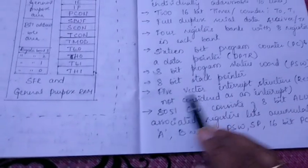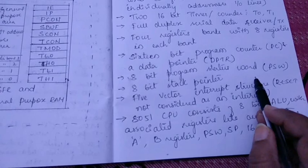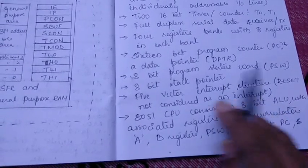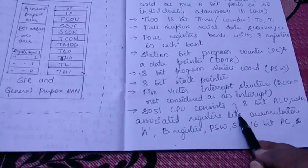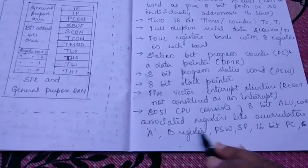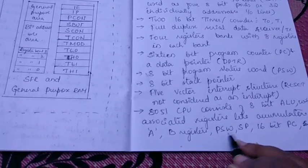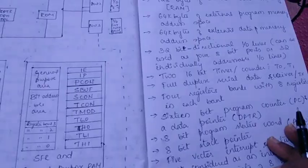Next there is a 5 vector interrupt structure, but here we cannot consider reset as an interrupt. Next, 8051 CPU consists of 8-bit ALU with associated registers like accumulators A and B registers, PSW, SP, 16-bit PC. This we have already discussed in the last section where we were differentiating microprocessor with microcontroller.